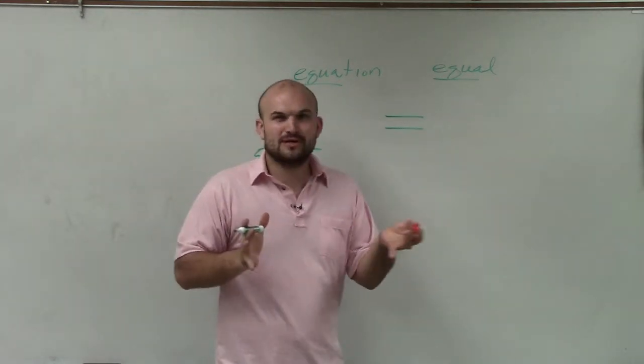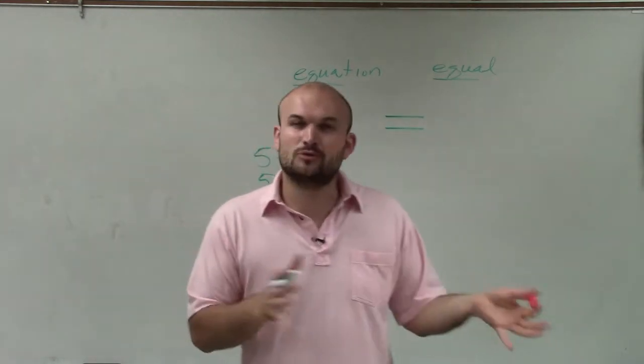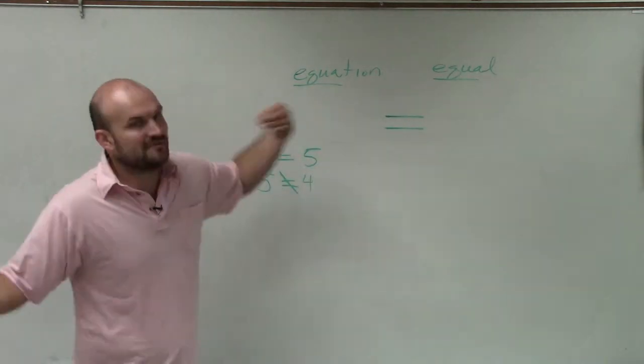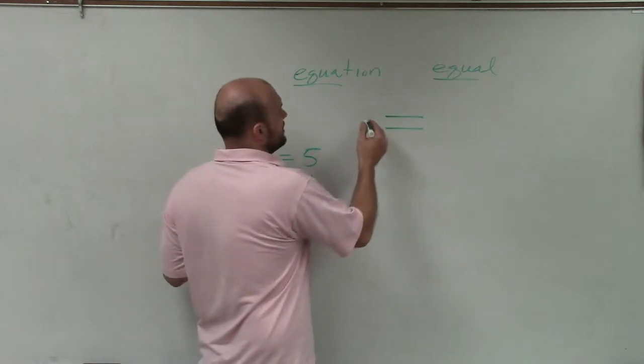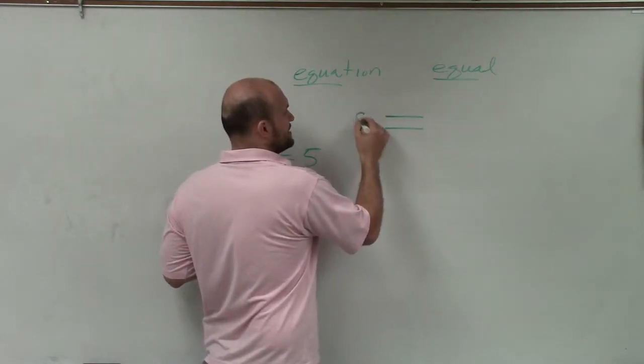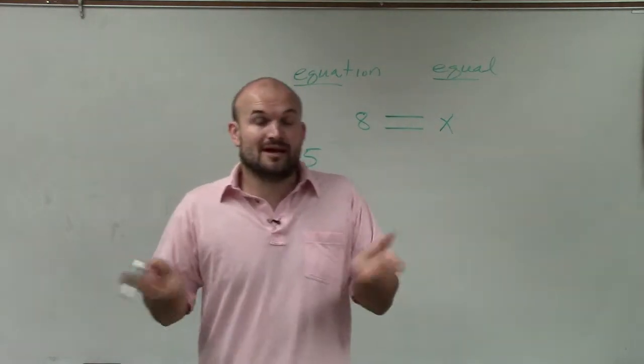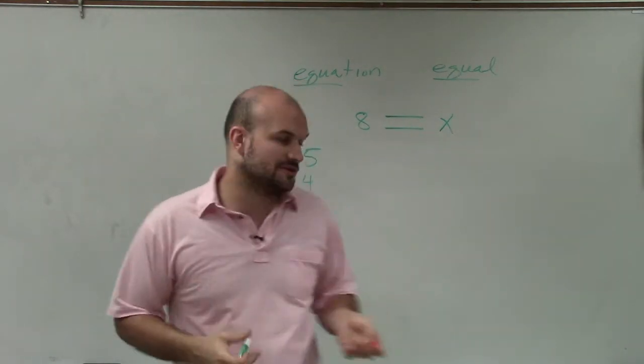But how exactly are we going to be using the equal sign or equations? Well, five equals five is very obvious. But a lot of times what we'd be doing is saying eight is equal to x, where x can represent any number, right? It's what we call a variable, which I get into.